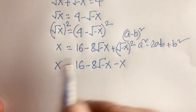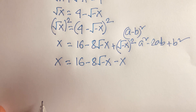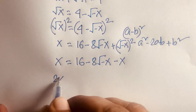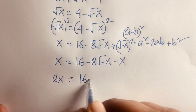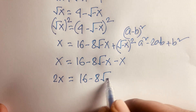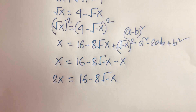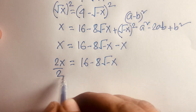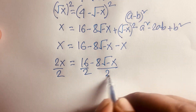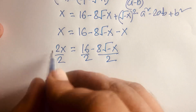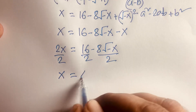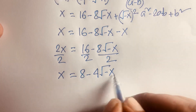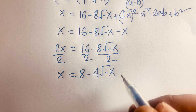Moving −x to the left side gives x + x = 2x = 16 − 8√(−x). Dividing both sides by 2, we get x = 8 − 4√(−x).